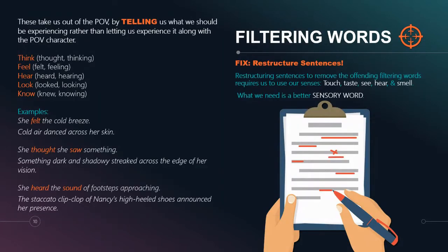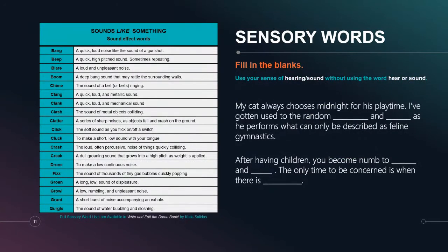Another way we get lazy is we tell people using filtering words — we tell them what the character is thinking, feeling, hearing, seeing, touching, tasting, instead of giving them the experience. When we write we are trying to convey through a character's eyes, so instead of telling the reader the character is experiencing something, why don't we help the reader experience it with them? To do that we can't simply remove a word — we need to search them out, restructure, and find a better sensory word.